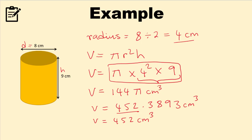Or you can round it to decimal places, two decimal places, two numbers after the decimal. This number is five or over. So we need to add one to this eight. That'll give us 452.39 centimeters cubed. And that's the answer.